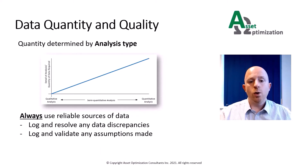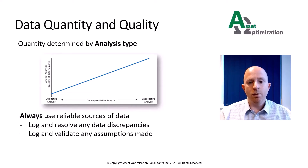The quality and quantity of the RBI data depends on the methodology that you're using. The more detailed or quantitative the methodology, the greater the data requirement. Regardless of the RBI type, it is very important that your sources of data are reliable, and where any discrepancies are found, that these are resolved and locked. Also, if you have to make any assumptions, then these assumptions are validated. This is specified in API 580 section 7.3 and is very important.